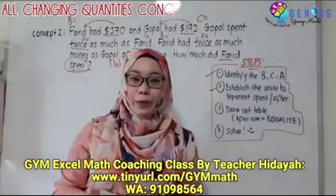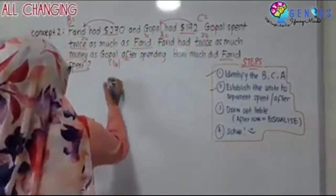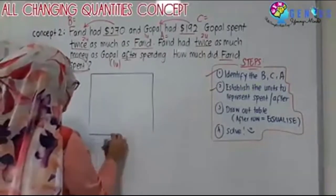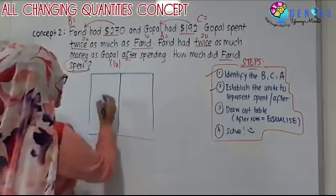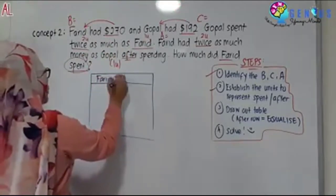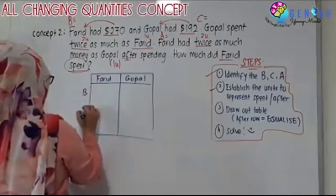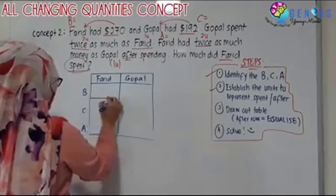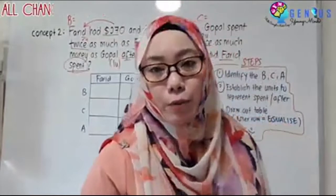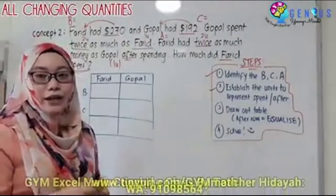Now we draw out the table — the all-changing quantity table. There will be two columns. The first person here is Farid, then we have Gopal. Then we have our B, our C, and our A. We draw out the lines and fill it up with the information that we have already underlined and identified earlier.